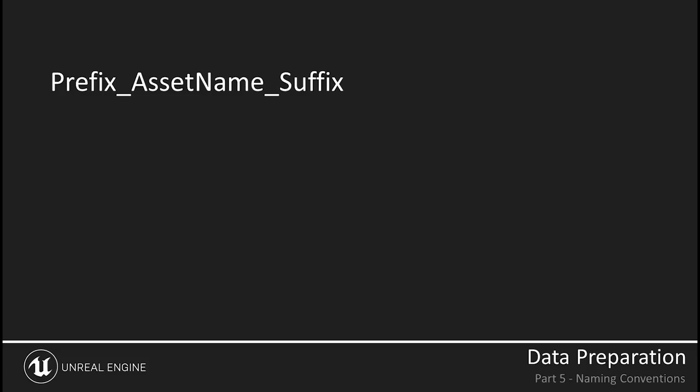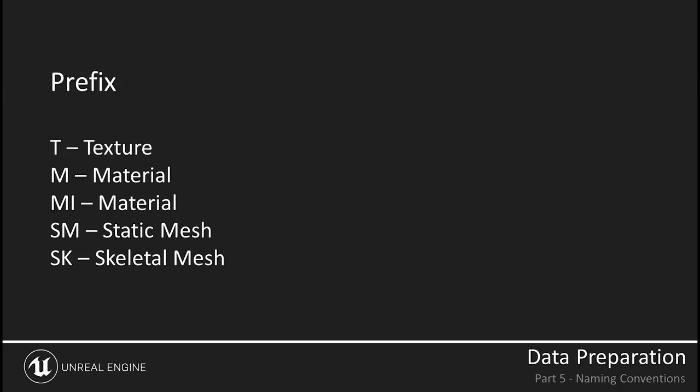A prefix is a short description or code — it can be as short as one letter — and it basically tells you what type of asset it is. Here's a short list of prefixes you can use: T for texture, M for material, SM for static mesh, and so forth. While you're no doubt familiar with assets such as textures and materials, some of these may be unfamiliar to you if you are new to Unreal. Be sure to check out the basic Unreal tutorials to learn about static meshes, skeletal meshes, material instances, and more.